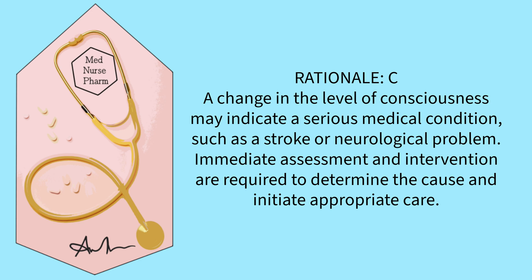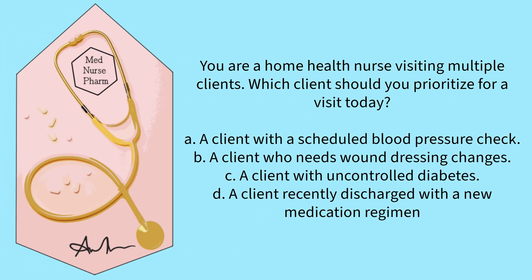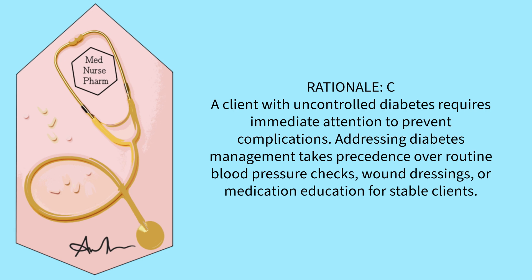Immediate assessment and intervention are required to determine the cause and initiate appropriate care. You are a home health nurse visiting multiple clients. Which client should you prioritize for a visit today? A client with a scheduled blood pressure check? A client who needs wound dressing changes? A client with uncontrolled diabetes? A client recently discharged with a new medication regimen? The correct answer is C. A client with uncontrolled diabetes requires immediate attention to prevent complications. Addressing diabetes management takes precedence over routine blood pressure checks, wound dressings, or medication education for stable patients.